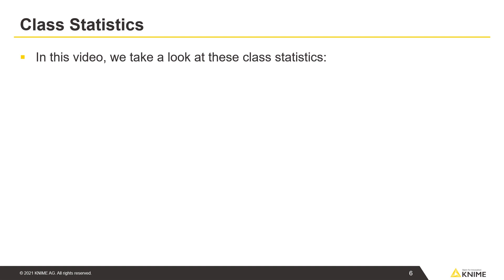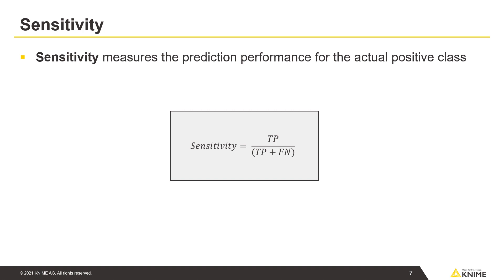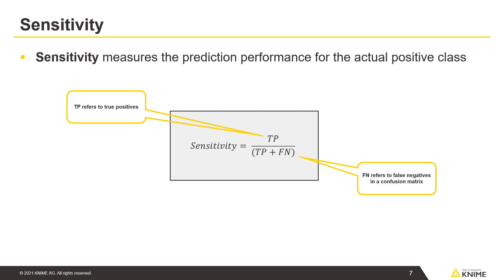In this video, we take a look at these class statistics: Sensitivity, Specificity, Precision, Recall, and F-Measure. Sensitivity measures the prediction performance for the actual positive class. Sensitivity is calculated with this formula, where TP refers to true positives and FN refers to false negatives in a confusion matrix.